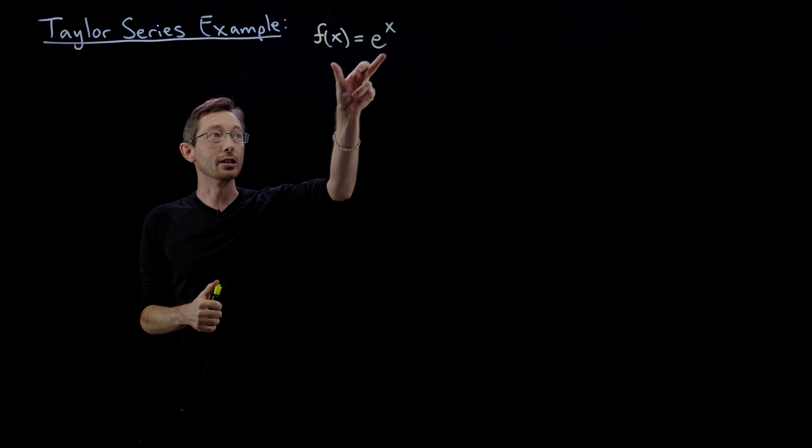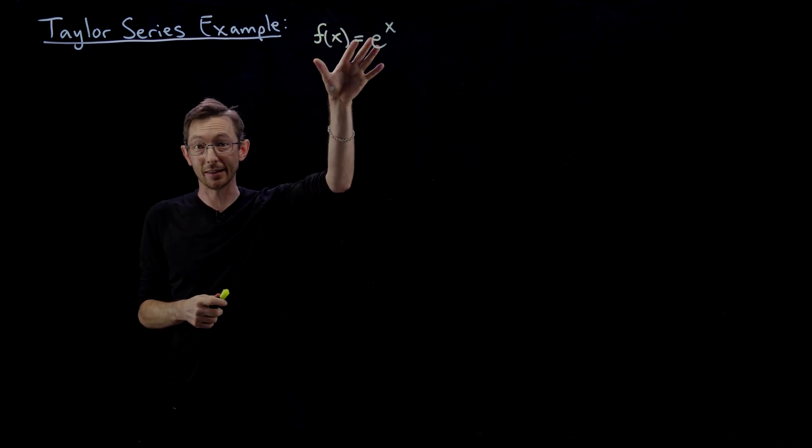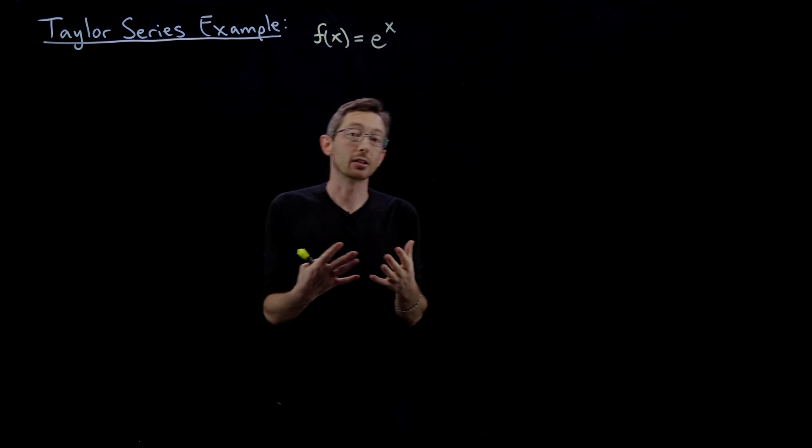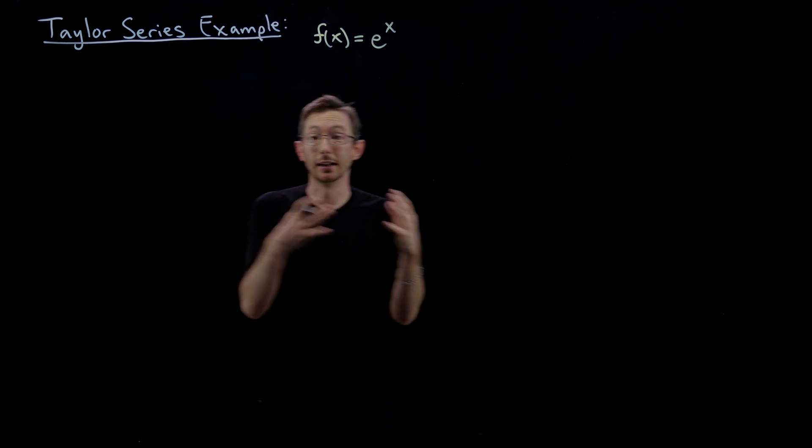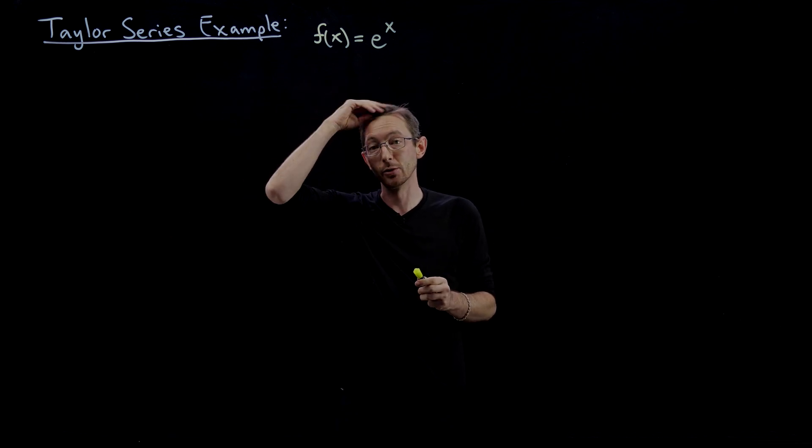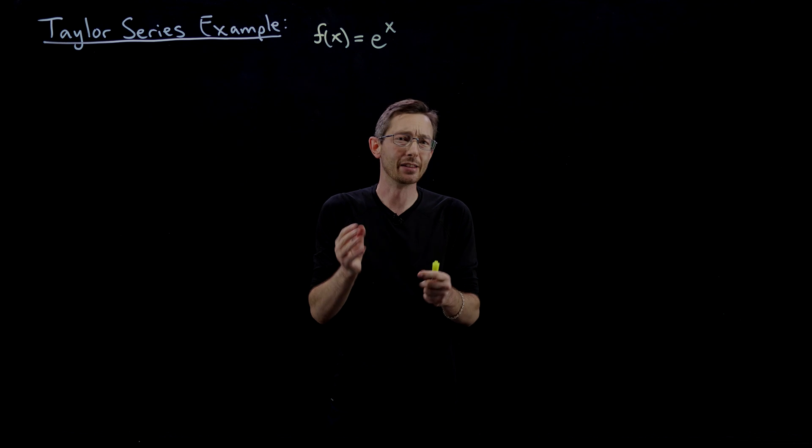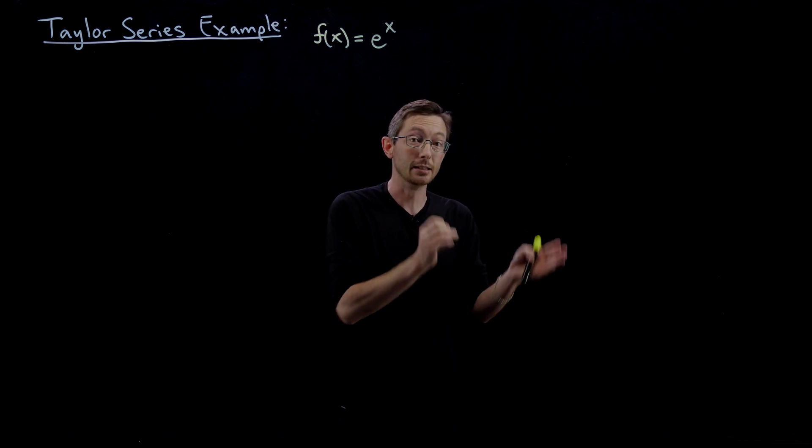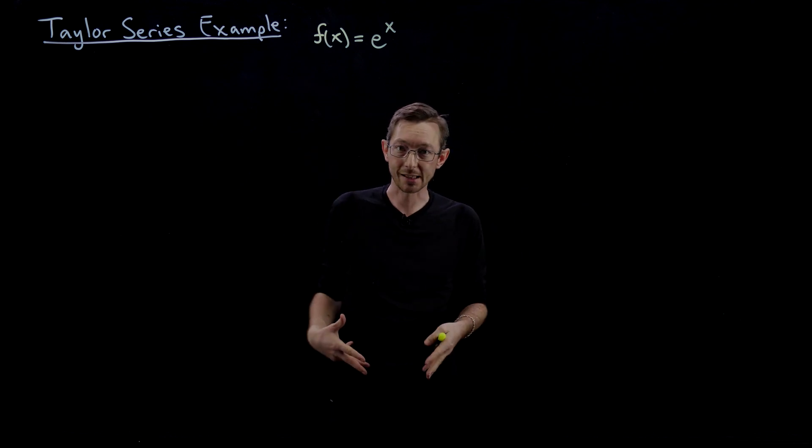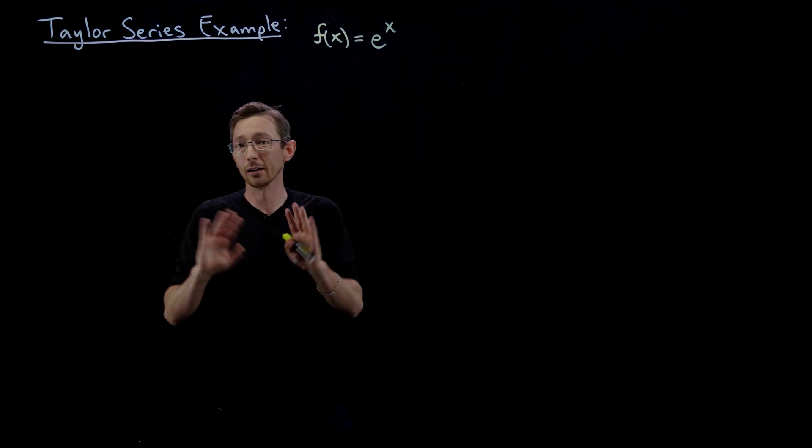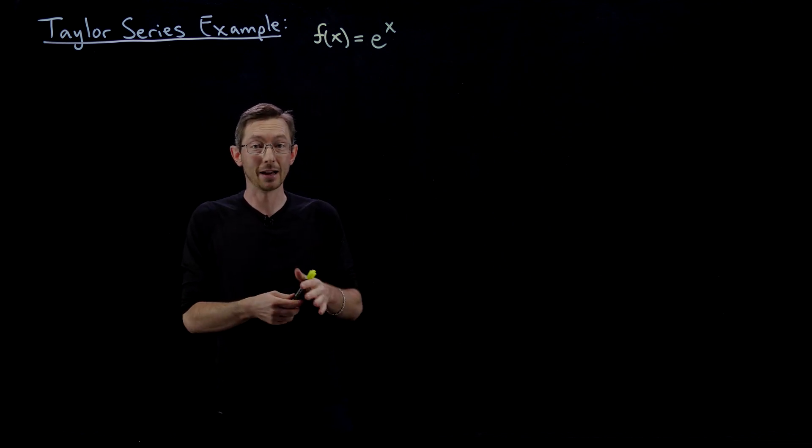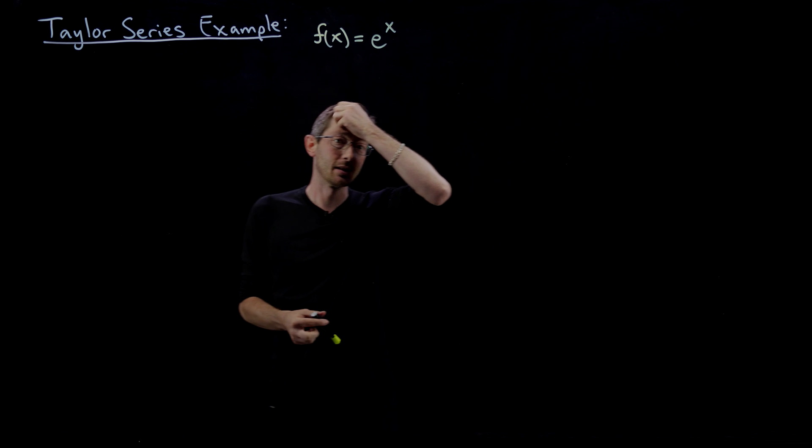This is a really neat example. We're literally going to write down the Taylor series for f(x) = e^x. I'm going to show you that you can use this Taylor series to derive the cosine and sine functions, to derive Euler's formula. This is going to be super important in differential equations, complex analysis. This will come up everywhere in math and applied math.